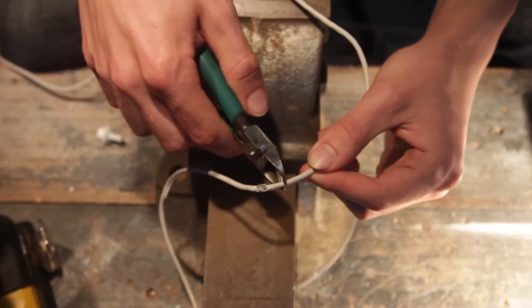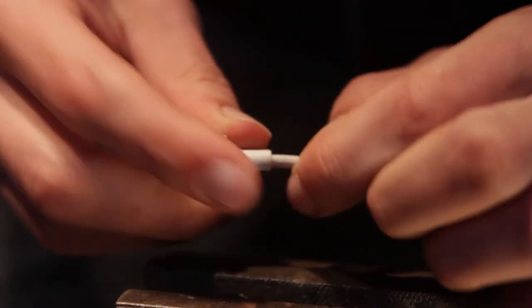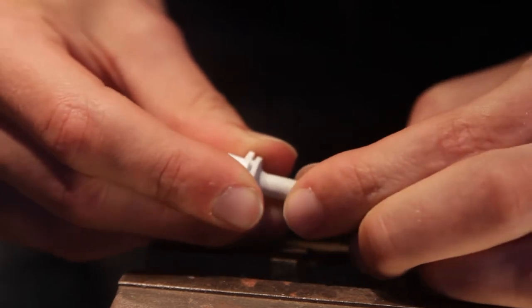Then make a fresh cut in the MagSafe cord, taking into account any other damage to the cord that may need to be removed. Thread this through the grommet.